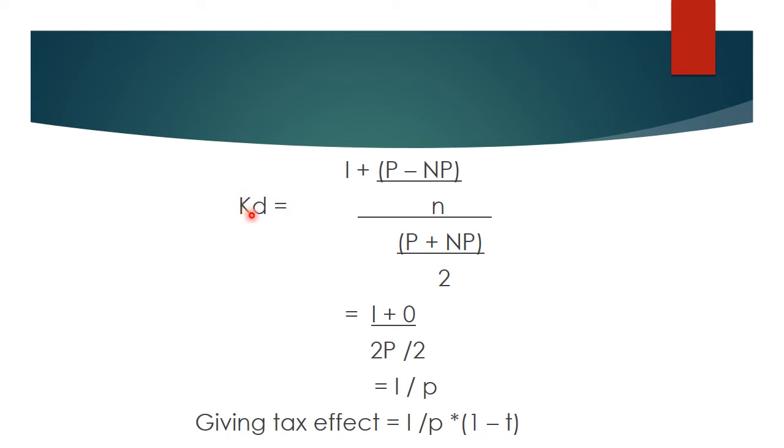Okay. We know the formula. Cost of debt is I plus (P minus NP) upon N, where P is your par value or face value, NP is the net proceeds upon number of years. Again, (P plus NP) that is par value plus net proceeds upon 2. Now, if you look at when it is issued at par primarily, your par value and your face value and net proceeds will remain the same. So, P minus NP is P minus P that becomes 0, and 0 upon N is 0 again.